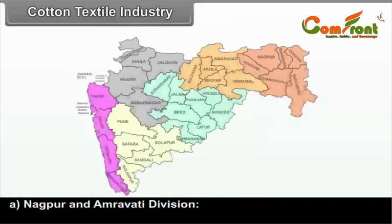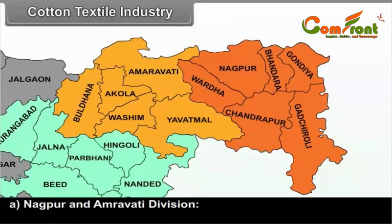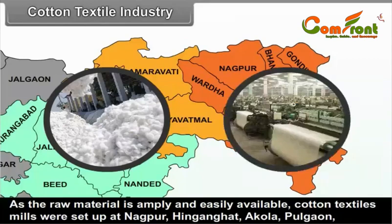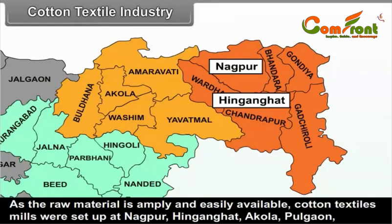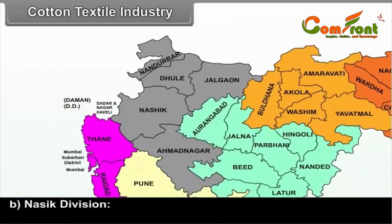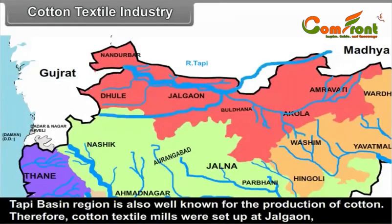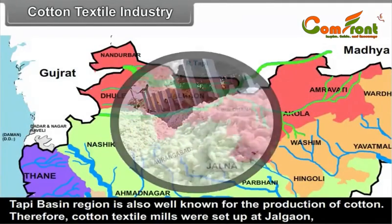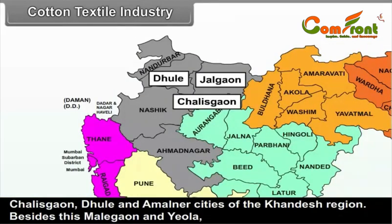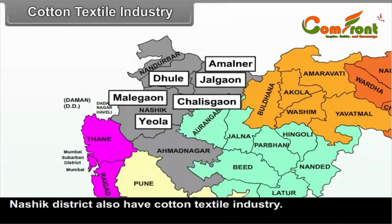Distribution of Cotton Textile Industry. A. Nagpur and Amravati Division: As the raw material is amply and easily available, cotton textile mills were set up at Nagpur, Hinganghat, Akola, Pulgao, Badnera and Achalpur cities of the Vidarbha region. B. Nasik Division — Tapi Basin region is also well known for the production of cotton. Therefore, cotton textile mills were set up at Jalgaon, Chalisgaon, Dhule and Amalner cities of the Khandesh region. Besides this, Malegaon and Yavla of Nasik District also have cotton textile industry.